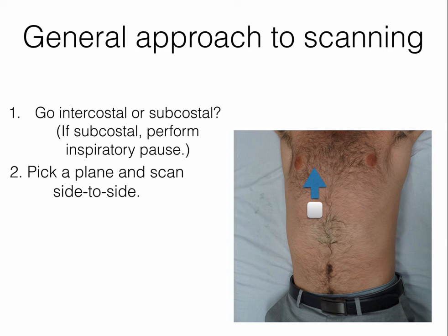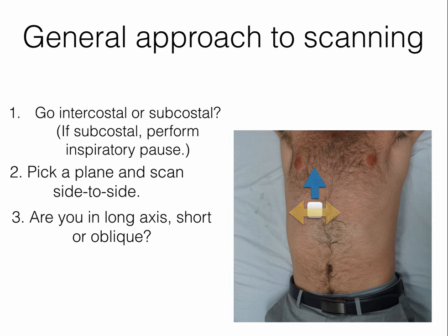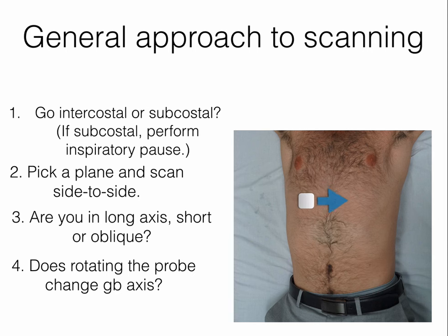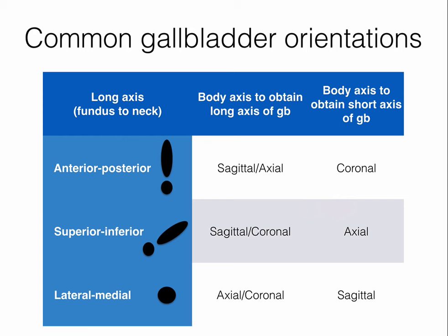Next, pick a body axis or plane and fan or tilt from side to side, taking note of where the gallbladder is and its orientation — whether you see it in long axis, short axis, or oblique. Then rotate the probe to see if it changes the gallbladder orientation. If you start with a subcostal approach with the indicator pointed to the patient's head and the gallbladder is in an anterior-posterior orientation, it looks like the exclamation mark is completely vertical. To obtain a short axis view in this case, you have to go coronal — to the mid or posterior axillary line.